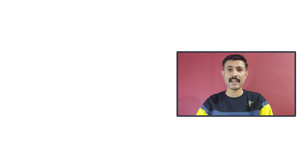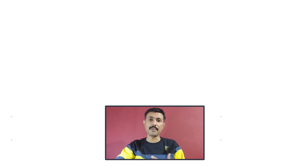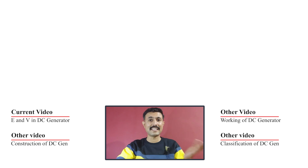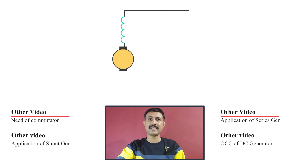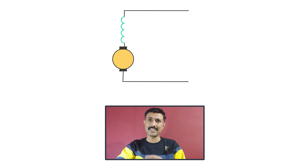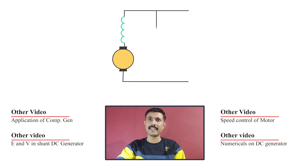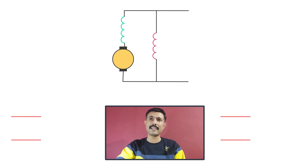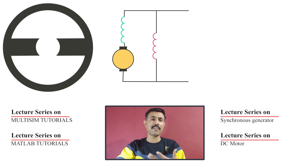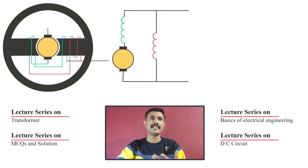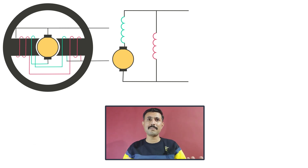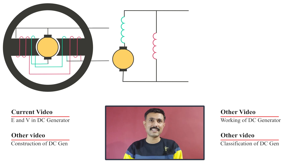First we will see the cross-sectional view and single line diagram of the long shunt generator. Basically, the field winding is divided into two sections: one is in series and the other is in shunt. The armature is connected in series with one field winding, and the other half of the field winding is connected as a shunt. In the cross-sectional view, the series field winding is connected with the armature, and the shunt field winding is connected separately. This is the complete winding distribution in the DC generator.